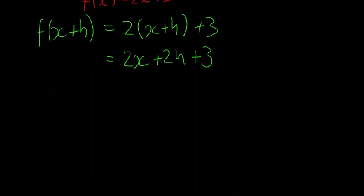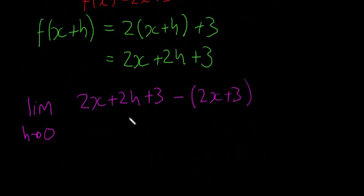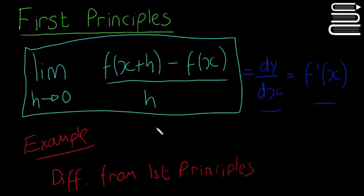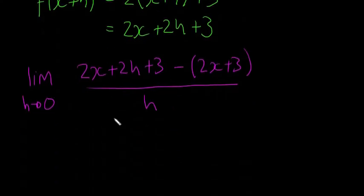So we're going to stick all of these into our limit. The limit as h approaches 0 of: (2x + 2h + 3) minus (2x + 3), all divided by h. So this is f(x + h), then the minus f(x) part, and then h on the bottom — it's the exact same formula, we're just putting in our different values.